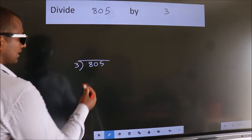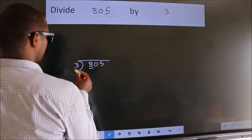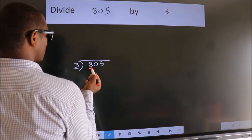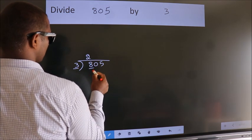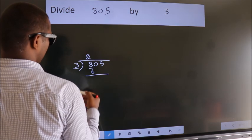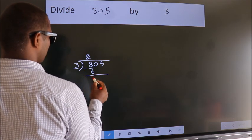Next. Here we have 8, here 3. A number close to 8 in the 3 table is 3 times 2 is 6. Now we should subtract. We get 2.